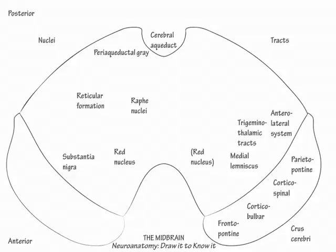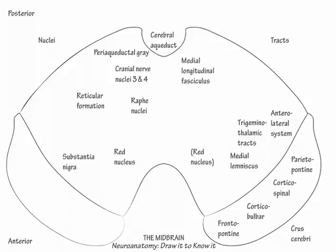Now show the cranial nerve 3 and 4 nuclei in the dorsal midbrain tegmentum. Next, label the supplementary motor and sensory fiber tracts in midline, just in front of the periaqueductal gray: they are the medial longitudinal fasciculus and, lateral to it, the central tegmental tract. The medial longitudinal fasciculus is involved in conjugate horizontal eye movements, and the central tegmental tract forms one leg of the triangle of Guillain-Mouret and carries reticular fibers to the rostral intralaminar nuclei of the thalamus.